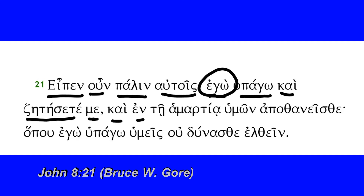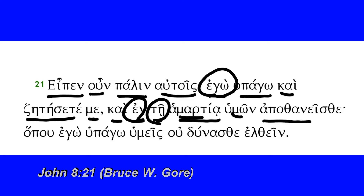'Kai,' the connective, 'en te hamartia' — 'en' is the preposition, takes the dative, the dative article here — in the. And then 'hamartia,' the dative of hamartia, 'humon,' possessive pronoun, genitive plural second person — so in the sin of you. 'Apothanesthe' — this is from 'apothnesko,' I die — middle voice, second person plural, future indicative. It carries the idea of you're going to die in and of yourself — you're going to die in your sins. It's a very sad statement, really, raising the prospect of no hope for those to whom he is speaking.